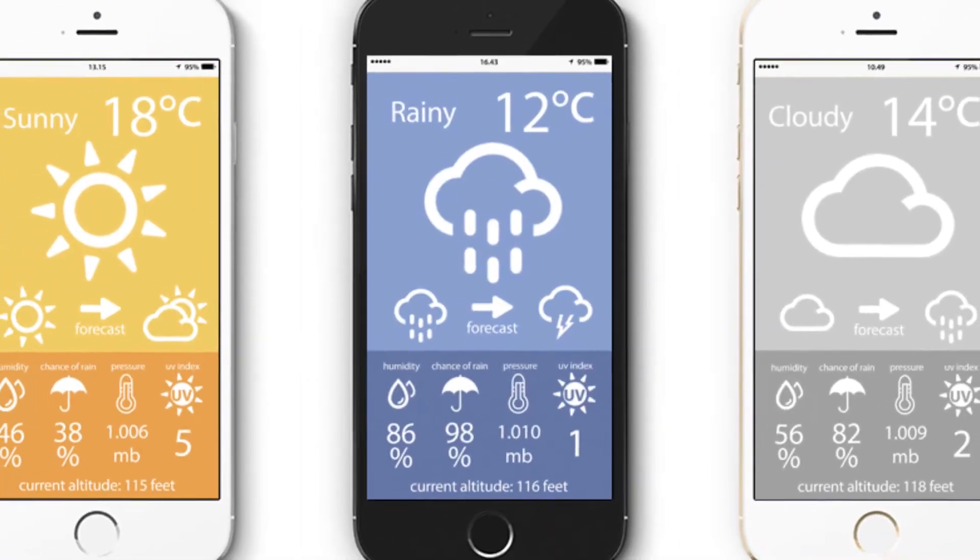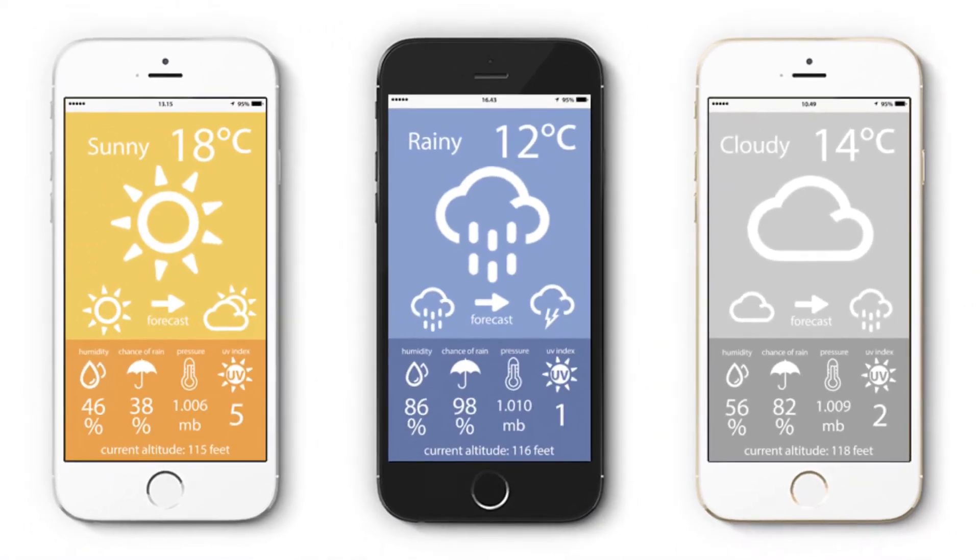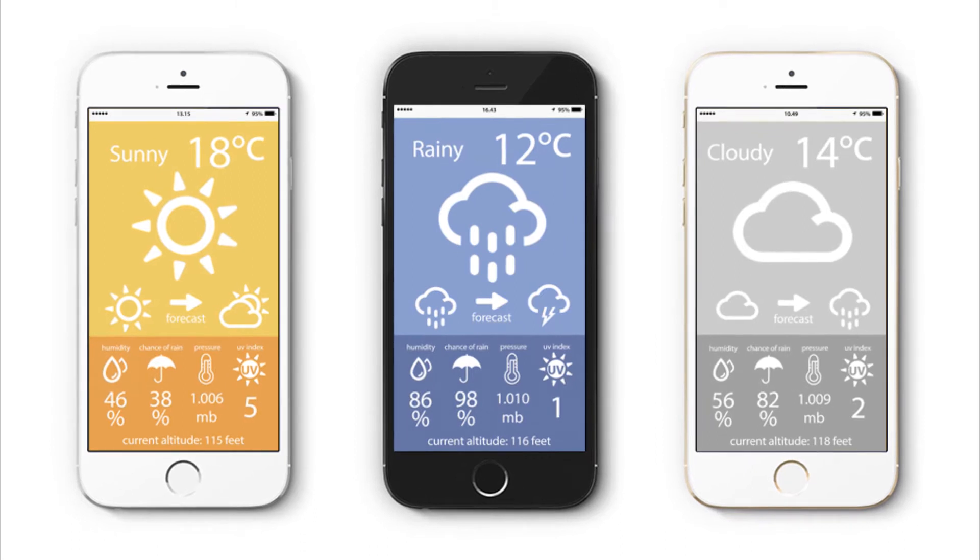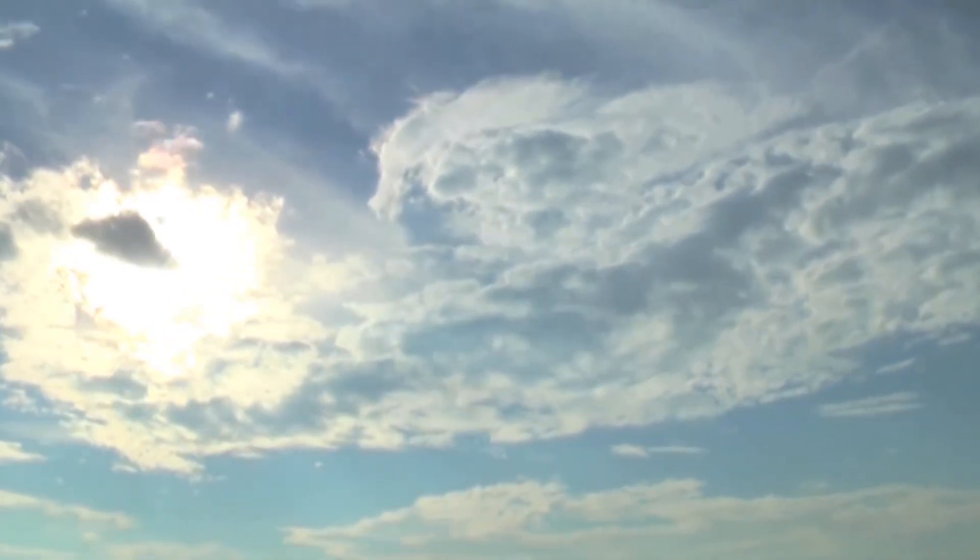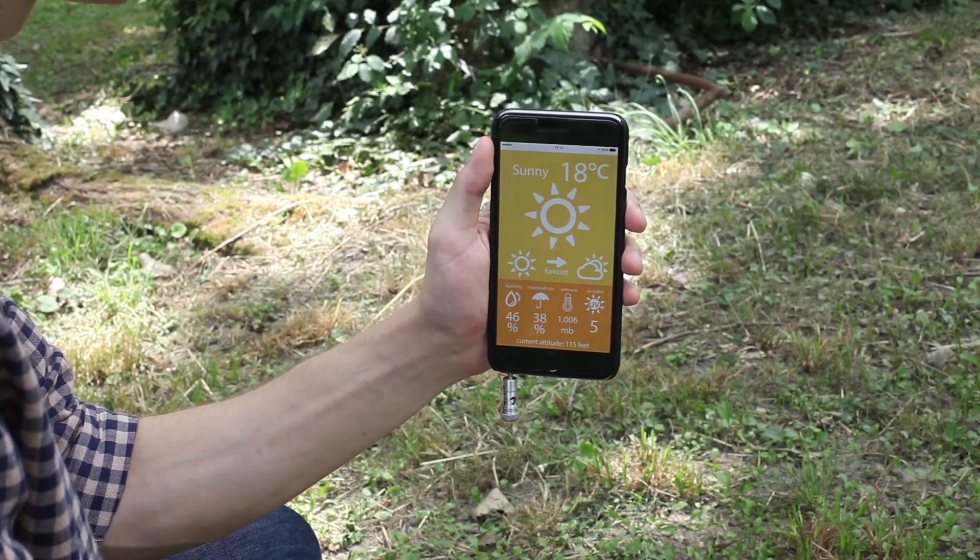Also, by measuring atmospheric pressure, you can know your altitude more precisely than GPS devices. You can also measure UV radiation and limit your exposure to these harmful UV rays.